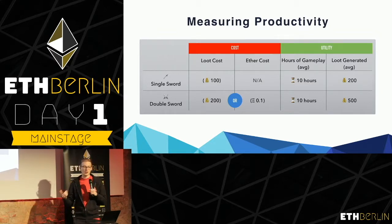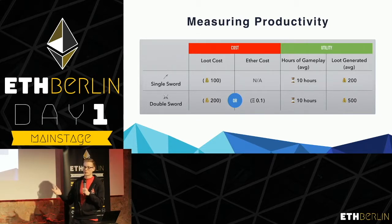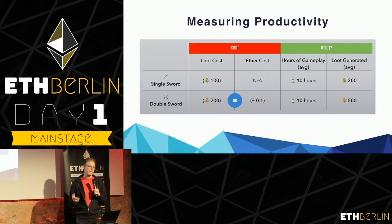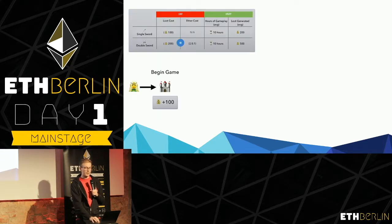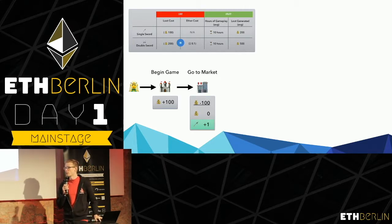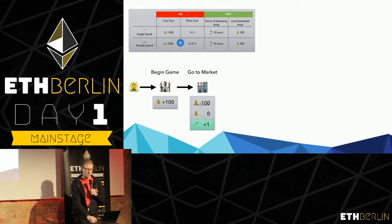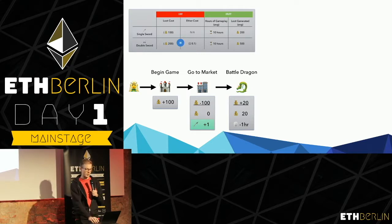The double sword costs 200 loot, so it would be valuable for a player to collect it because over the same average 10 hours of gameplay they'd be able to collect 500 loot — making it two and a half times more productive. A gameplay scenario might look like this: a player begins a game and is instantly given 100 loot. They go to a marketplace, purchase the single sword, then go to battle — say, a dragon. Over the course of one hour of gameplay, they would earn 20 loot.